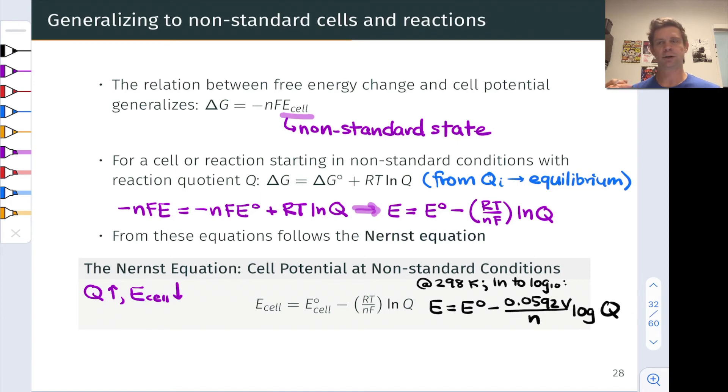This gives us a sense of how much for example increasing Q by a factor of 10 will drop the cell potential. So this equation is really powerful. Given information about the galvanic cell temperature and the reaction quotient we can make a prediction of what the cell potential will be as long as we know the standard cell potential which we can get from standard reduction potentials in most cases.